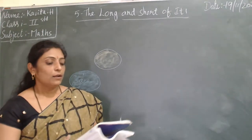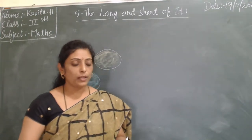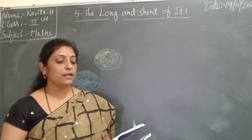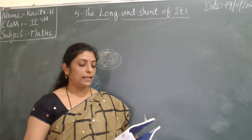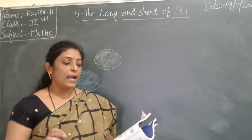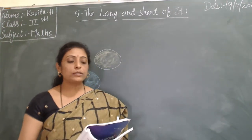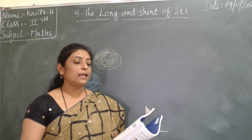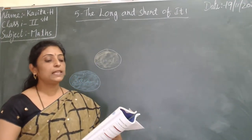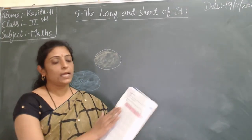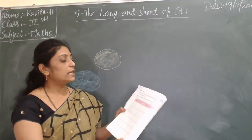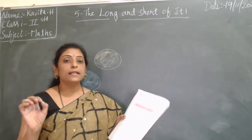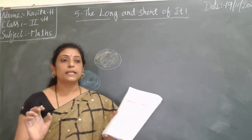Here one instruction is there — you have to follow. Identify objects around you whose length can be measured using a centimeter scale. Measure the length and fill in the table below. The table has two columns: one is the name of the object, another is the measurement in centimeters. You will only measure small objects.